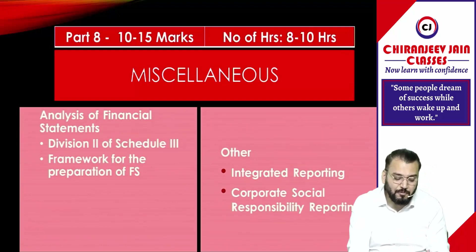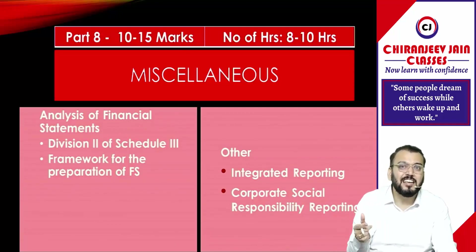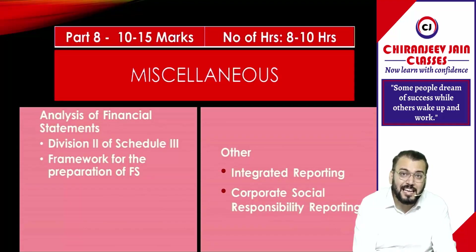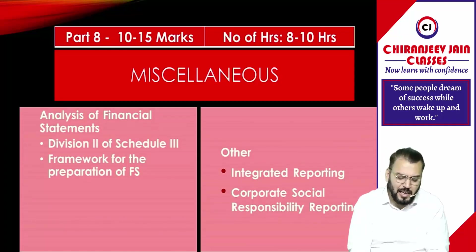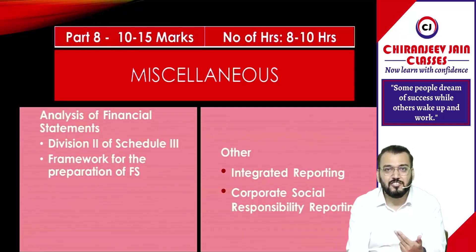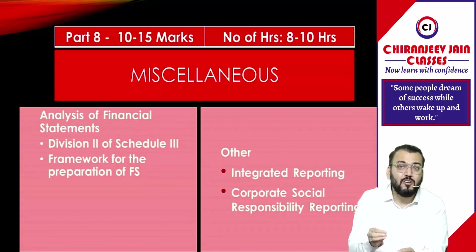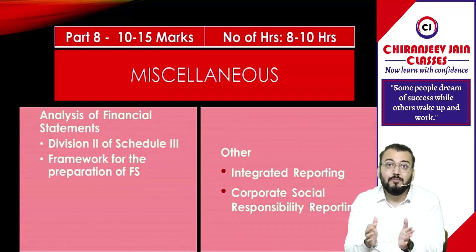The last part — Part 8 — is the miscellaneous chapter. There will normally be four chapters: analysis of financial statements, conceptual framework (theoretical), integrated reporting (theoretical), and CSR reporting. I have given 10 hours for these chapters. From analysis of financial statements, a question of 10 marks may come; conceptual framework and integrated reporting normally involve theory questions of 6 marks. This completes the entire chapter-wise hour allocation. In this way you can start and complete your revision in 180 hours for the first revision.